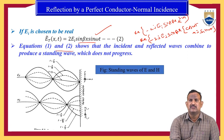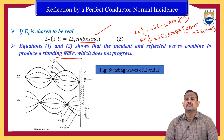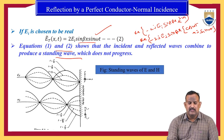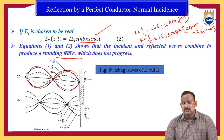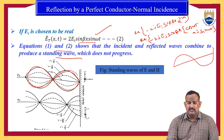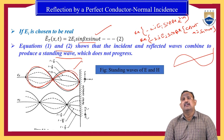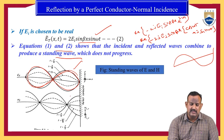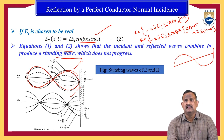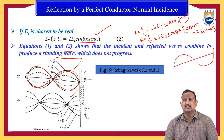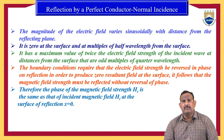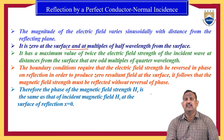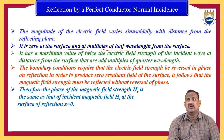Equations 1 and 2 show that the incident and reflected waves combine to produce a standing wave. A standing wave does not progress, so we cannot transfer information using it. The magnitude of the electric field is 0 at the surface and at multiples of half-wavelength from the surface. It has a maximum value of twice the incident electric field strength at distances that are odd multiples of a quarter wavelength from the surface.